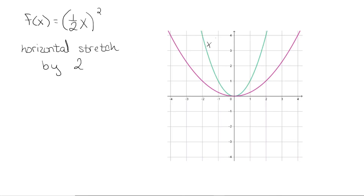Here I have the graph of x squared, and we want to horizontally stretch. So we look at our x coordinates: negative 1 times 2 is negative 2, and negative 2 times 2 is negative 4. On the other side, 1 times 2 is 2, and 2 times 2 is 4. So now we've horizontally stretched this graph by a factor of 2.